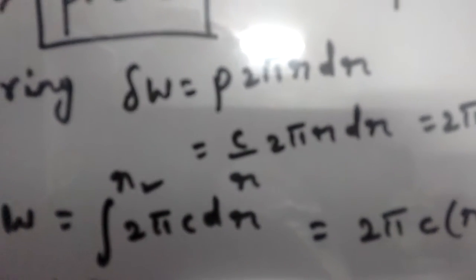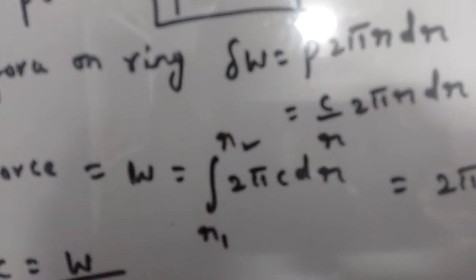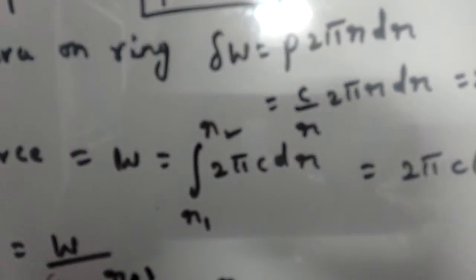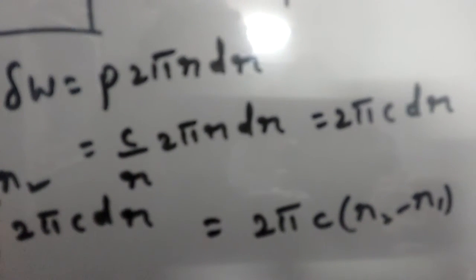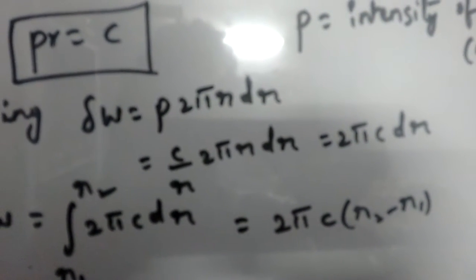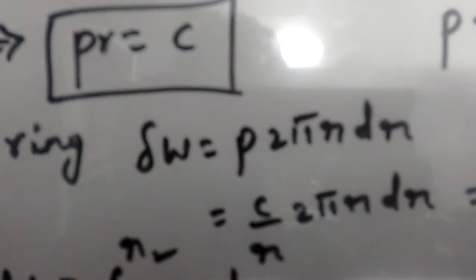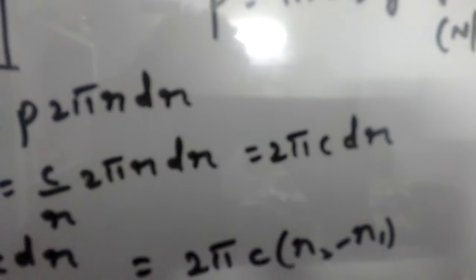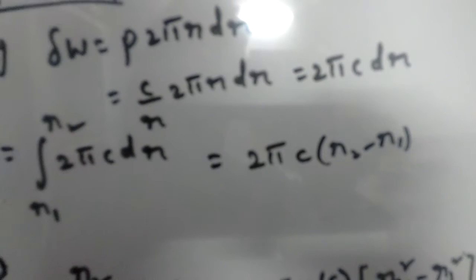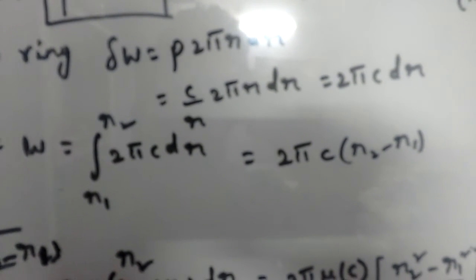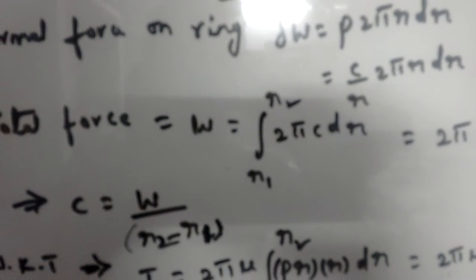The total force acting on the frictional plate is obtained by integrating the above equation. Substituting p·r = constant, so p = c/r, gives the integral of 2π·c·dr. Integrating yields the total normal force: W = 2π·c·(r2 − r1), and therefore c = W / (2π·(r2 − r1)).